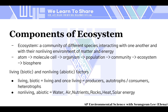So basically, what does the word ecosystem mean? An ecosystem is basically a community of different species interacting with one another and with their non-living environments of matter and energy. We saw the different levels of organization of nature in our last video, so if you haven't, check it out.